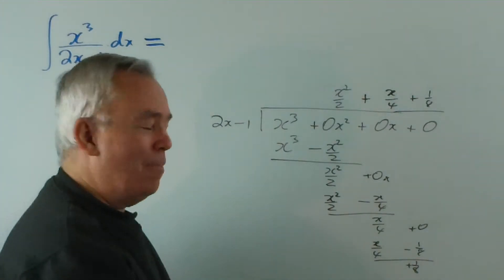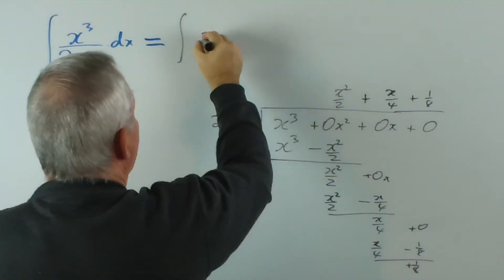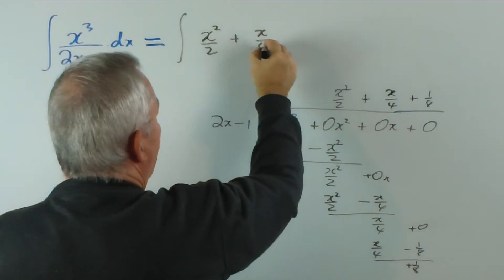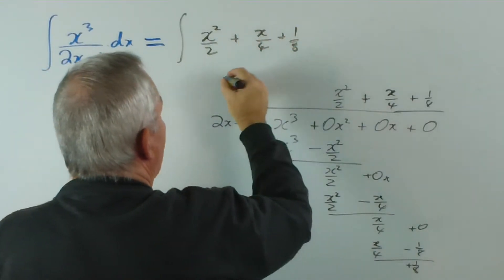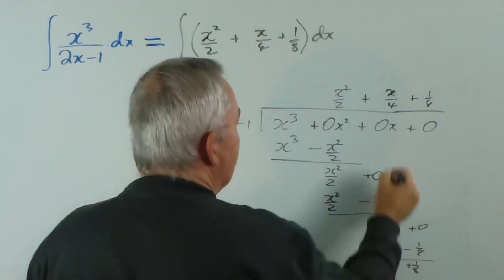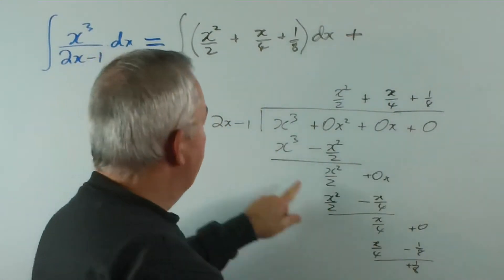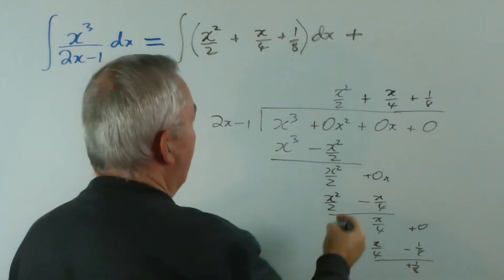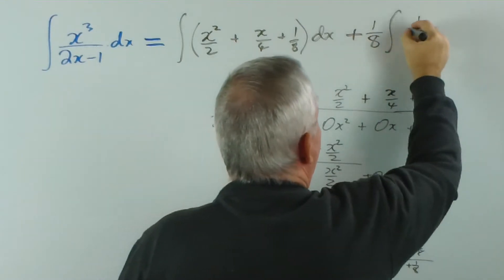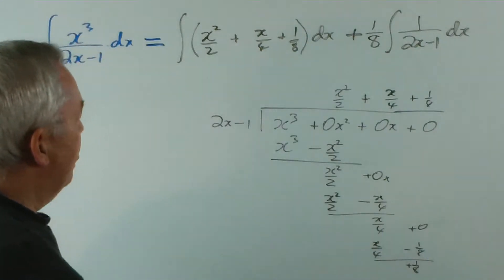Well, that looks riveting, doesn't it? But what it means is this. We get the integral of this. Now, I'm going to keep that separate. Plus, now this was the remainder, so it stays over this. So, 1 eighth over... I'm going to leave the 1 eighth out the front. And that's what we get from our division.